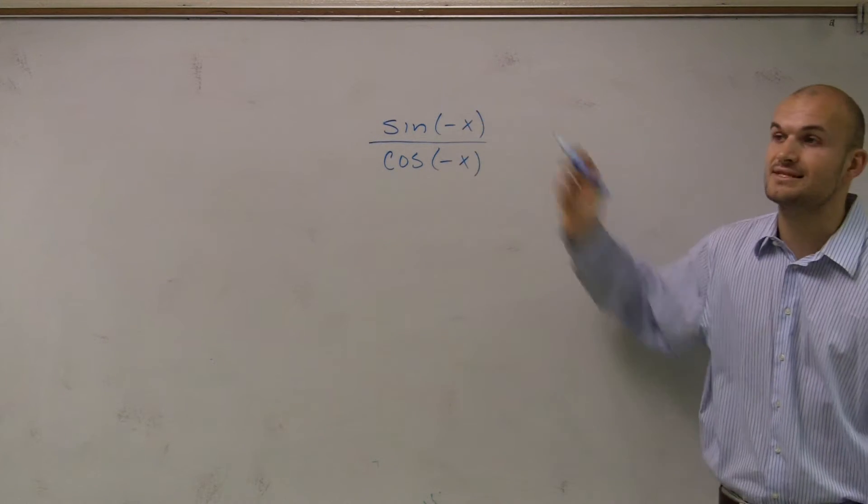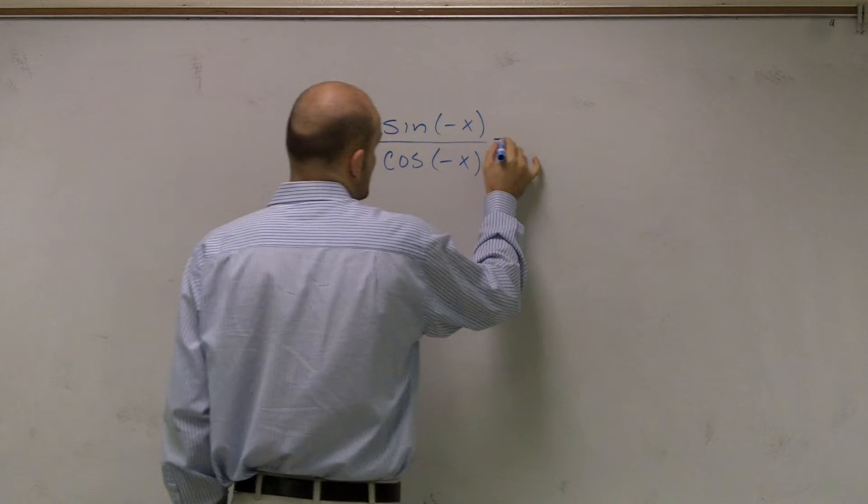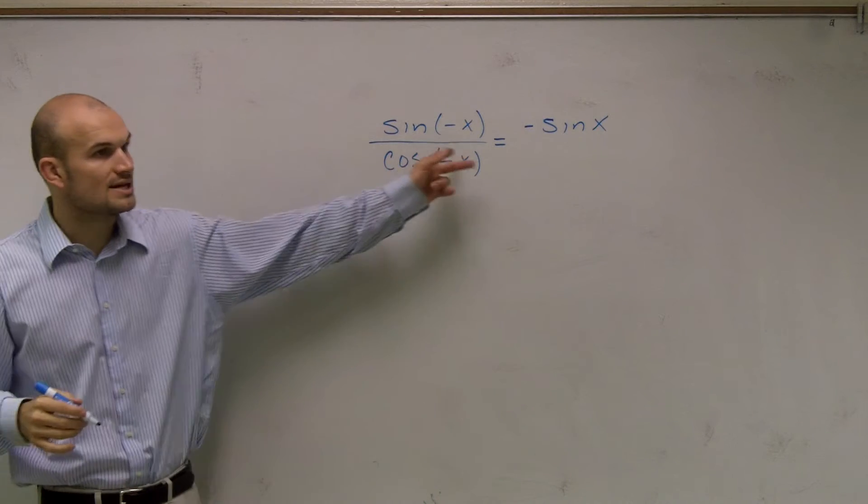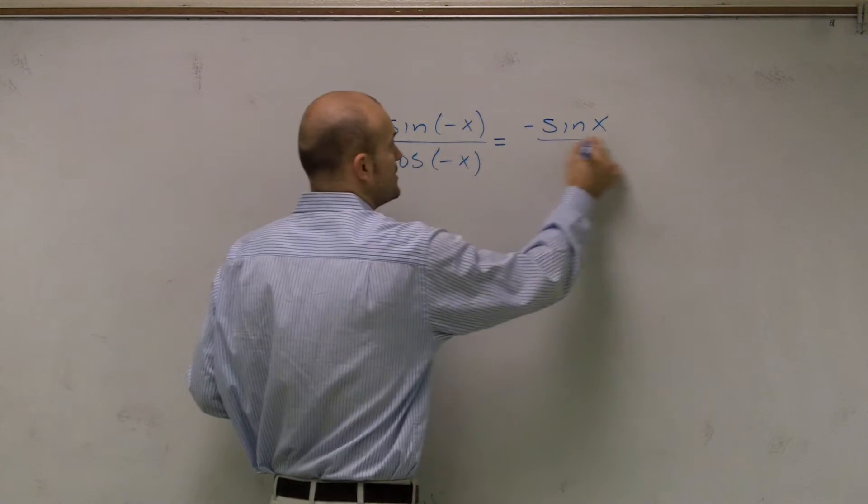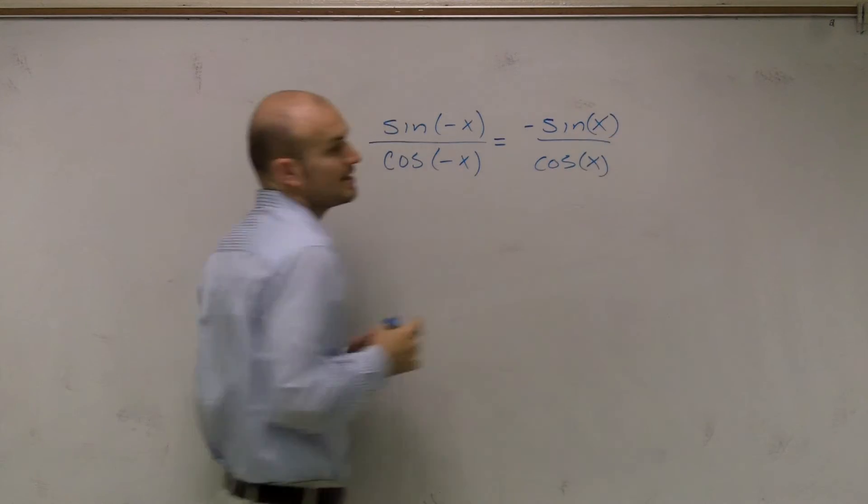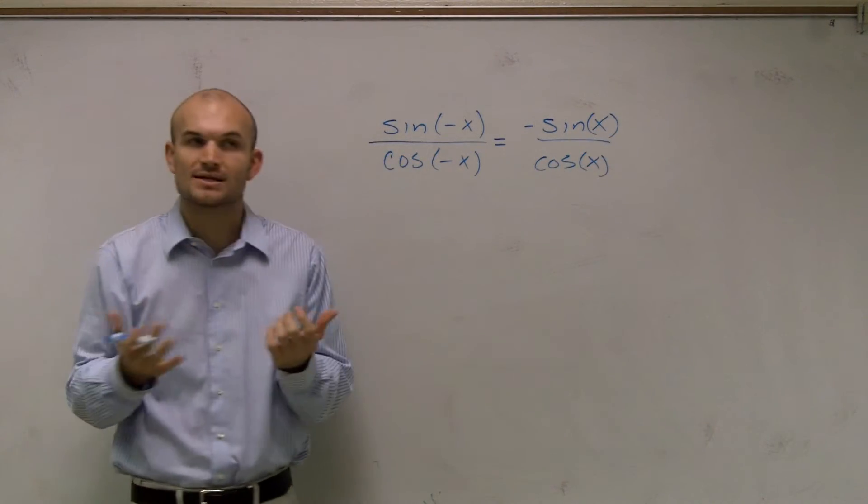You need to know that the sine of negative x simply equals negative sine of x, and the cosine of negative x equals the cosine of x. And these are our two trig identities which we've been practicing.